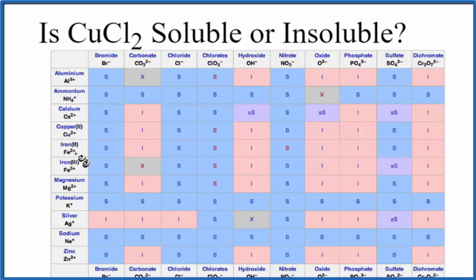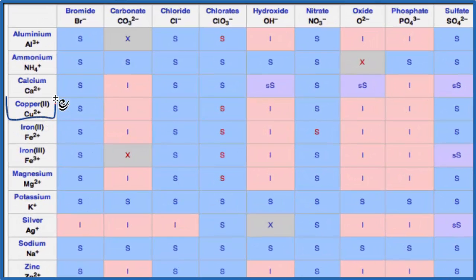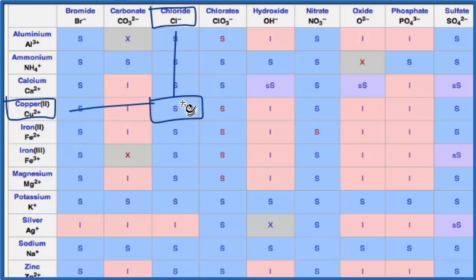Let's find copper(II) right here, Cu2+, and then the chloride, Cl-. We go over and down, and that S right there means it's going to be soluble in water. When you put it in water, it'll dissolve, dissociate, or break apart into its ions.